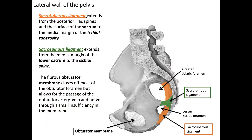Attached to the bony landmarks of the pelvis are important connective tissues. The sacrotuberous ligament attaches from the sacrum to the ischial tuberosity. The sacrospinous ligament attaches from the sacrum to the ischial spine and also forms the greater and lesser sciatic foramen. The obturator membrane forms the connection where the obturator internus will attach, and small openings in the membrane allow the obturator artery, vein, and nerve to pass through.